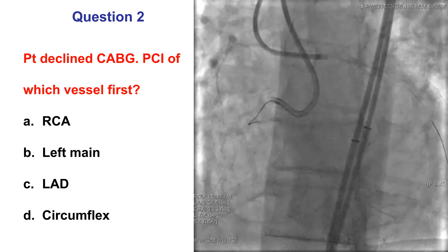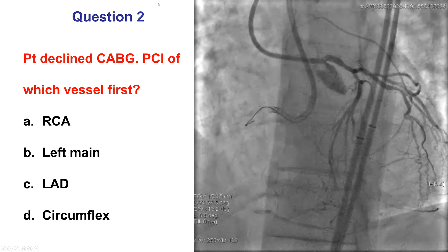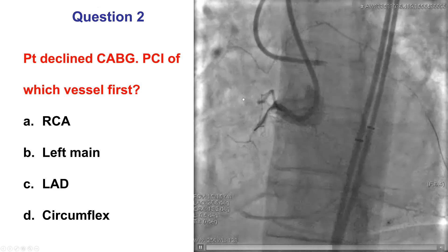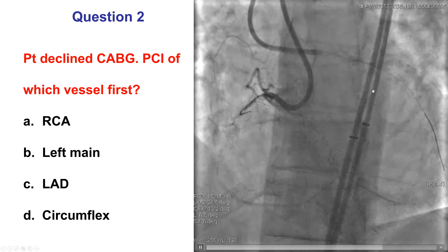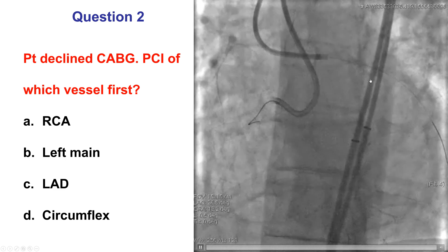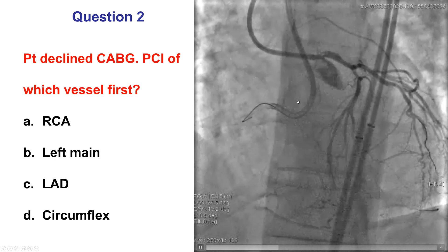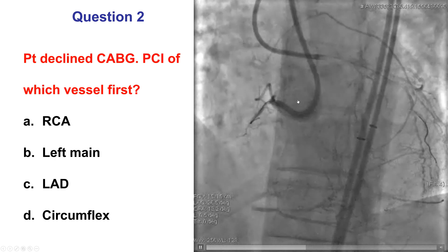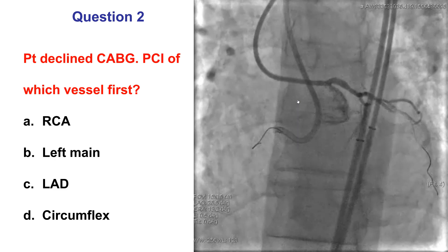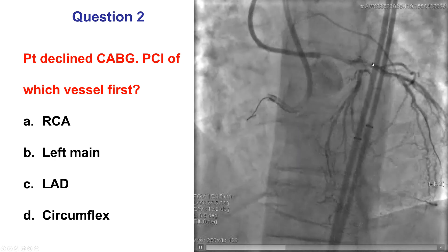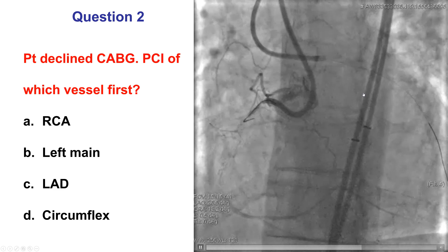So in cases like this, which one should be the initial vessel to attempt? The CTO, which would make PCI of the left safer, or PCI of the left, that might make the CTO safer? This is hard to have a correct answer, but our thought was to start with the right coronary artery, which would then make PCI of the left less risky.